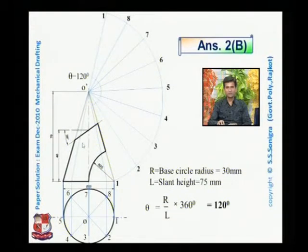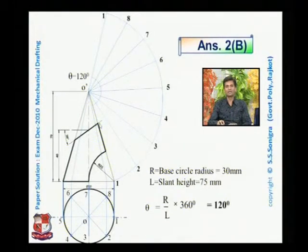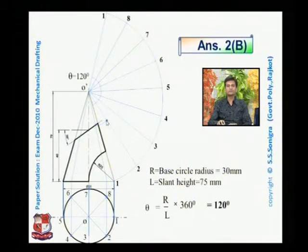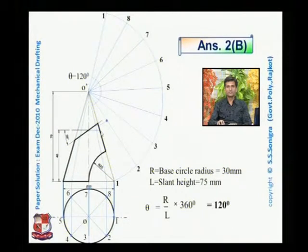After drawing the generators, find out the points of intersection between the solid and the cutting plane. This is the imaginary generator O2 — this is the point of intersection. From that point, draw a horizontal line, transfer it to the true length, then take O dash as center, O dash to this point as radius, and draw an arc. That arc will cut O dash 2 at the first point. Similarly from here, draw a horizontal line that cuts the true length at a point; draw an arc and it cuts O dash 3 at point P3. Then from the next cut, draw an arc cutting O4. So we have picked up three points; the fourth point is O1.